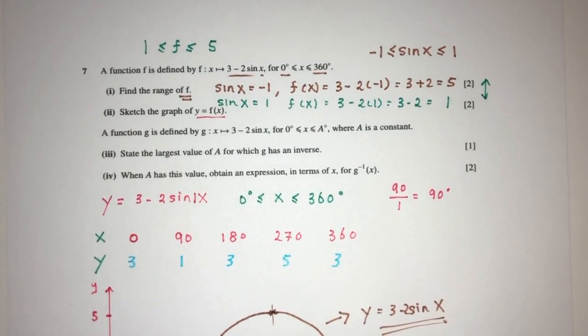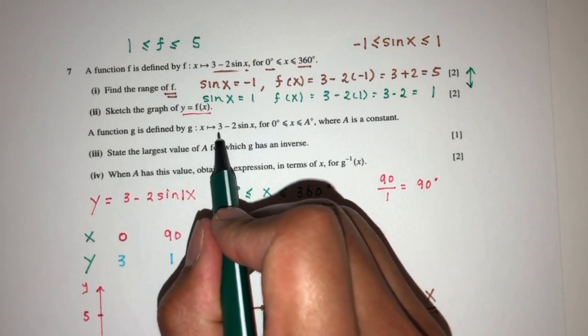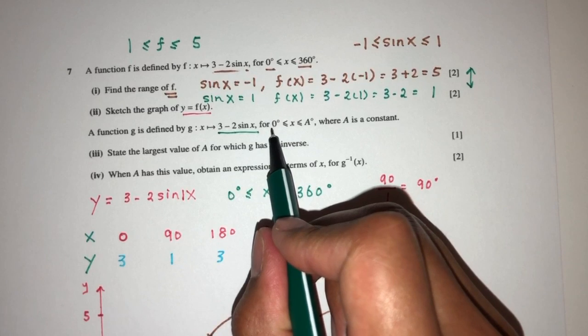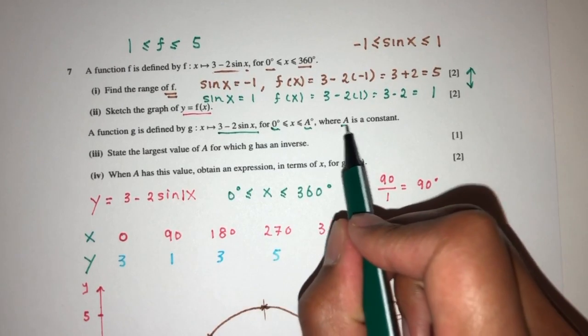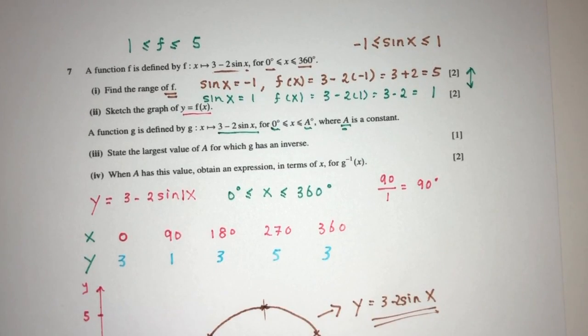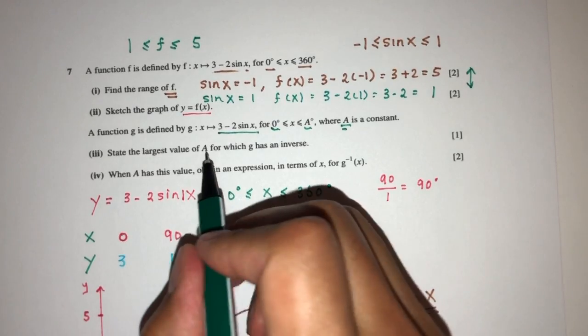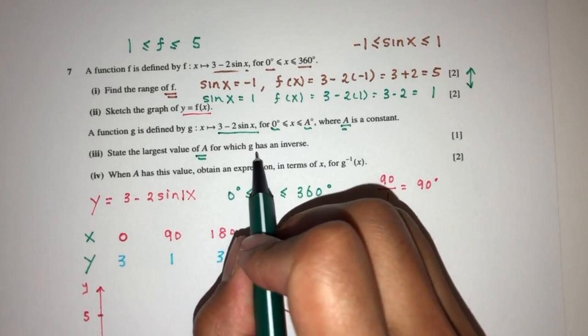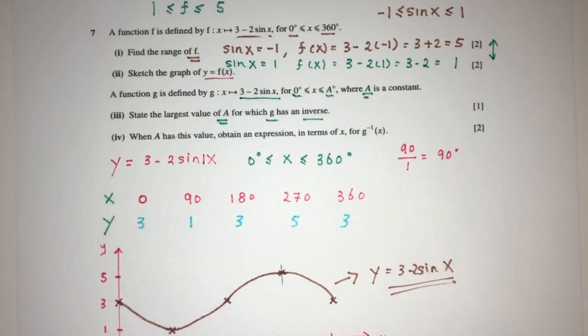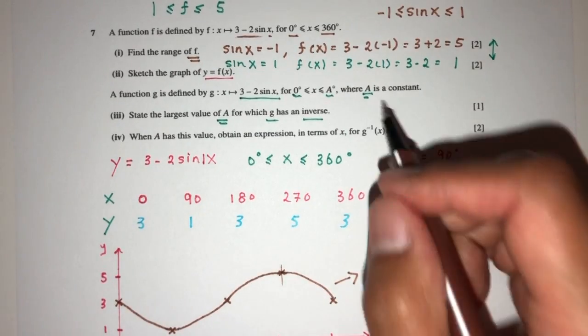Now for part 3, we have what? We have another function now. Function g is defined by this. Same thing again, where it is between 0 and a. Our a is a constant to be found. Now, state the largest value of a, for which g has an inverse. So, we have to understand, for g to have an inverse, it has to be a one-to-one function.